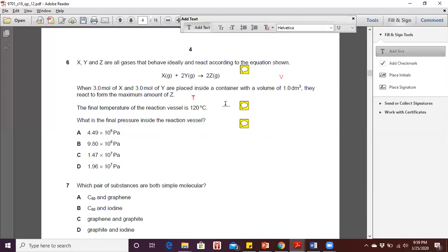Now I'm going to label this as T. What is the final pressure, which is the P-value inside the reaction vessel? Now, as given from the question, X, Y, and Z all are gases which behave ideally.